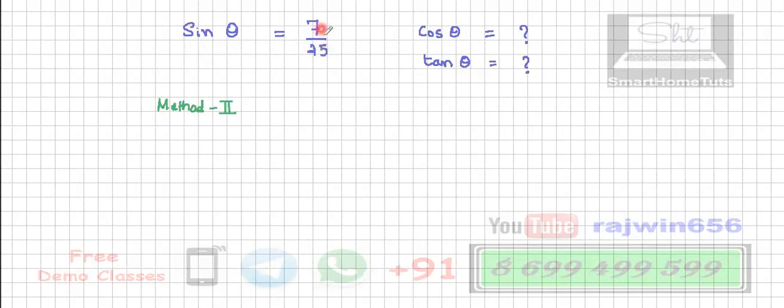So sine theta is given as 7 upon 25. We are supposed to find the value of cos theta and tan theta. This is the second method that we are going to do, that is the triangle method.